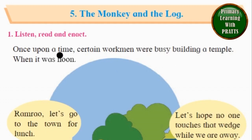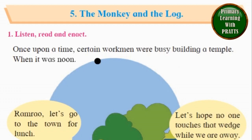Now it is telling us the beginning of the story. Once upon a time, certain workmen — that is, some people who were doing some work. What work were they doing? They were very busy because they were building a temple. So once upon a time, some workmen were busy building a temple.